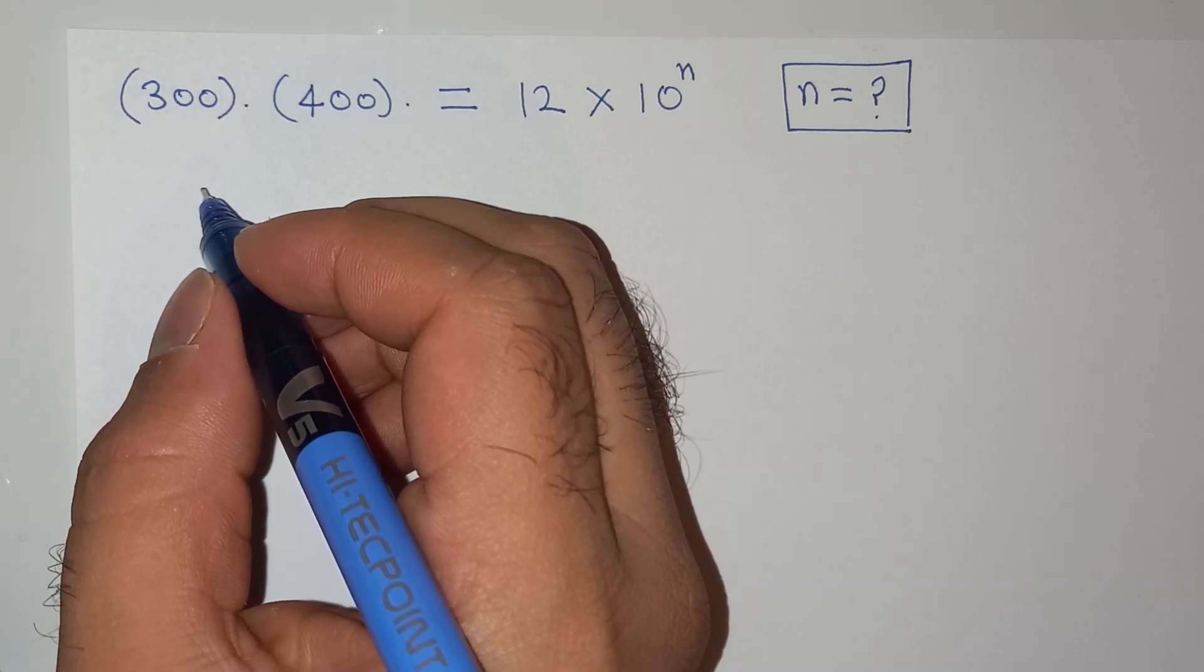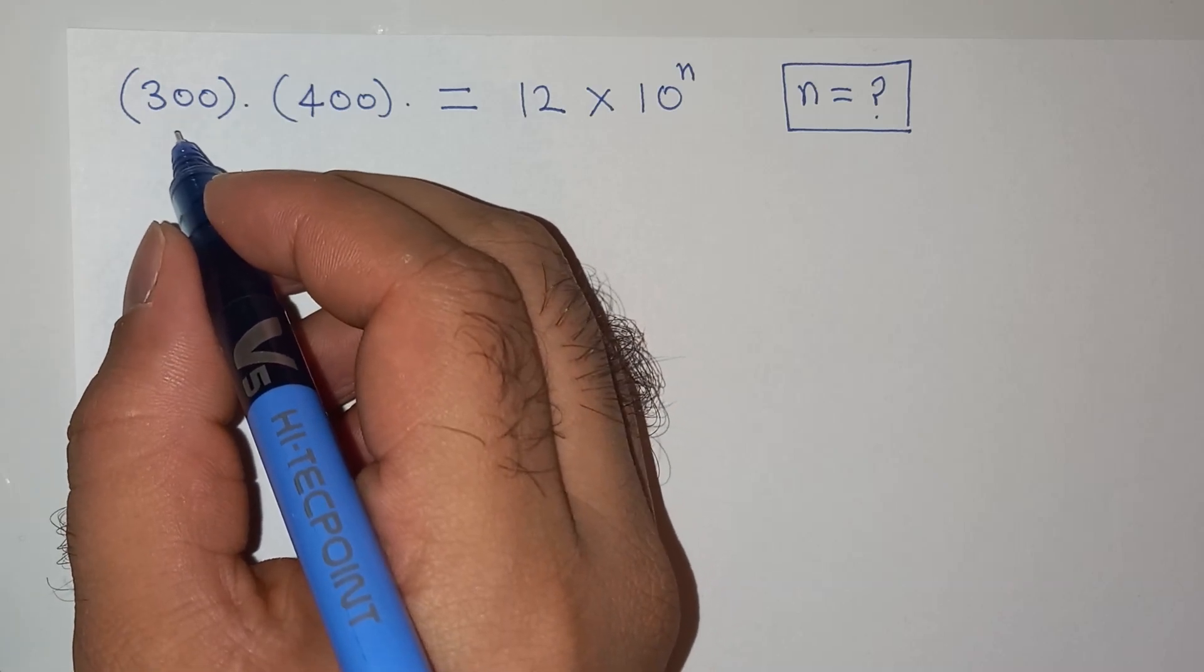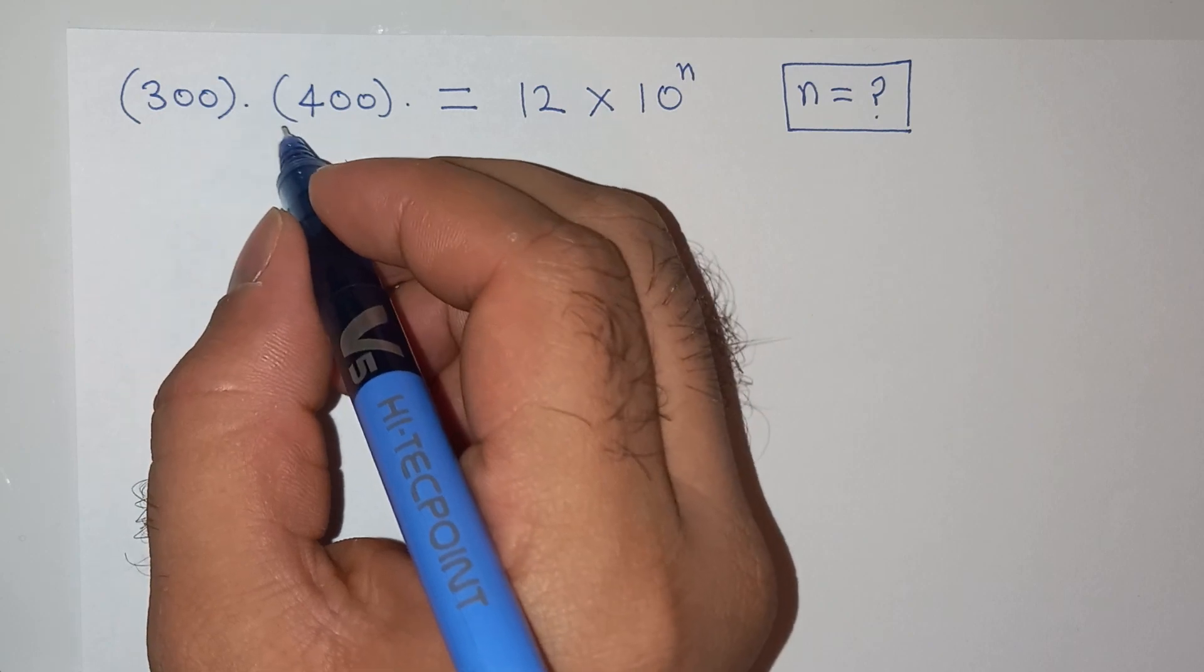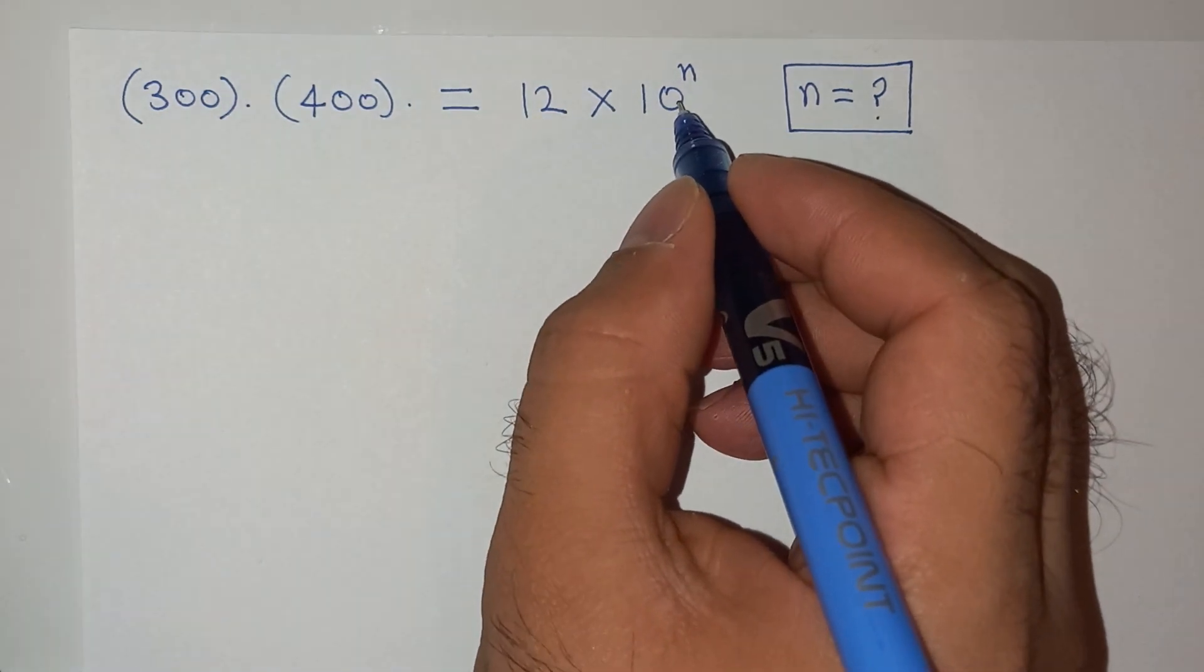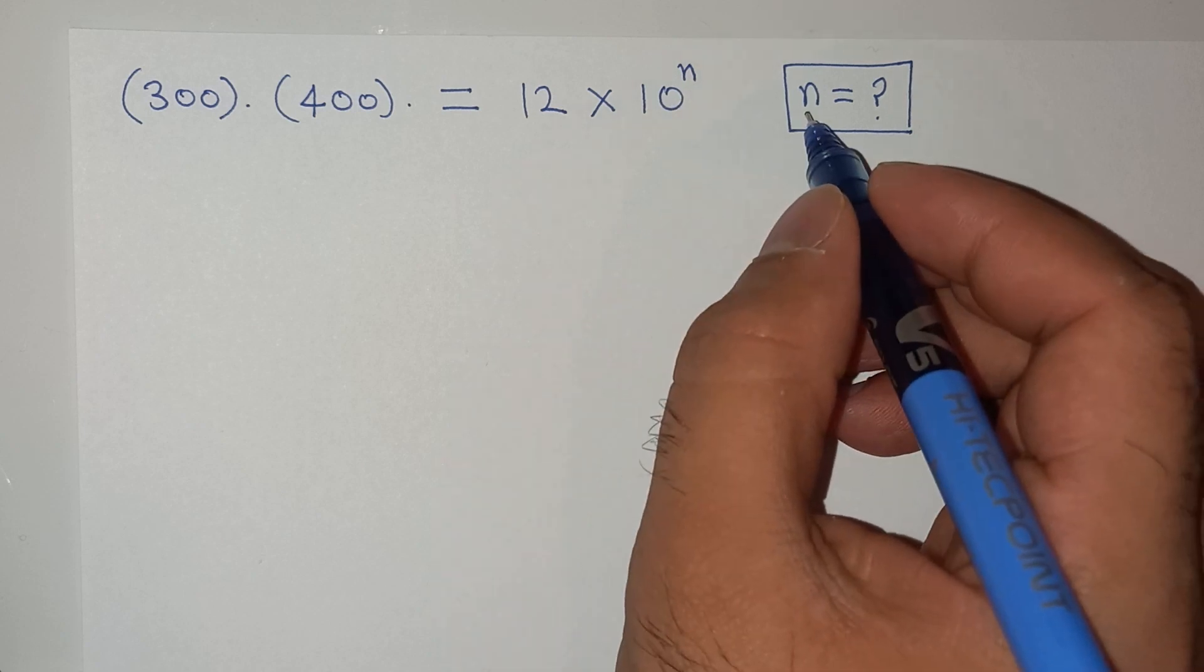Hi guys, welcome back to your channel. We are going to solve this question today which is 300 multiplied by 400 equals 12 multiplied by 10 power n, and we need to find the value of n.